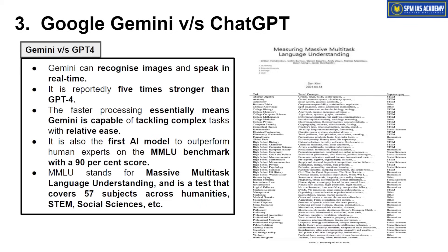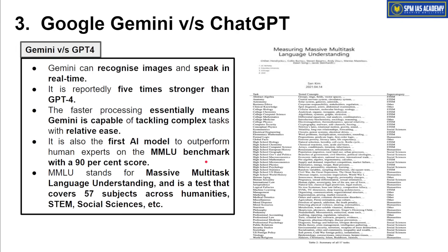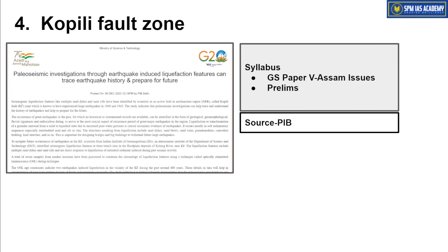Previously, no artificial intelligence system could beat human experts in the MMLU test. But Gemini has beaten human experts, scoring 90% in this 57-subject test. This indicates that increasingly upgraded and sophisticated artificial intelligence systems are now emerging.